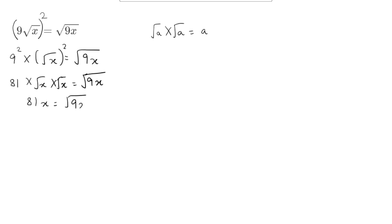So we get 81x is equal to root of 9x. Now we need to remove the square root from the right hand side. So we will be squaring both sides. If we square both sides, 81x squared is equal to root of 9x squared.